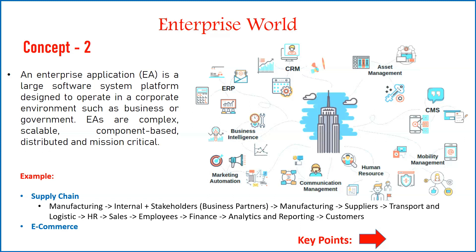All departments are dependent on each other. Manufacturing depends on suppliers for raw materials. The manufacturing department is directly related to HR, which hires resources for business needs. The sales department generates customers, and based on customers you plan manufacturing. When manufacturing is done, you supply to different locations via the transport and logistics department — everything is connected, communicating 24/7.